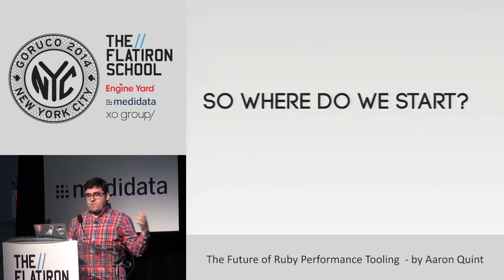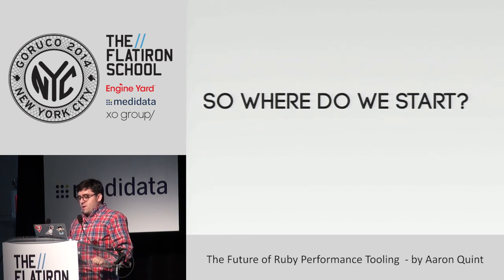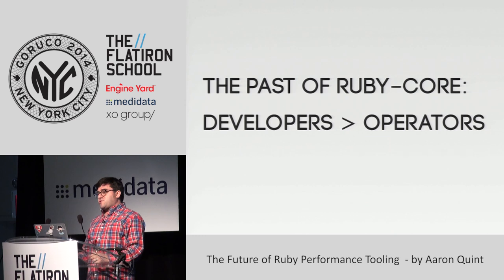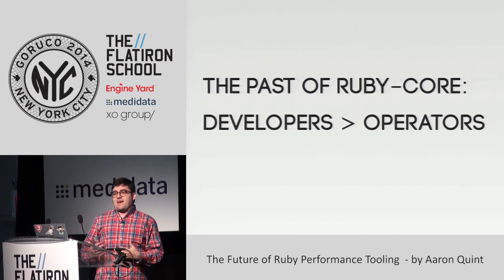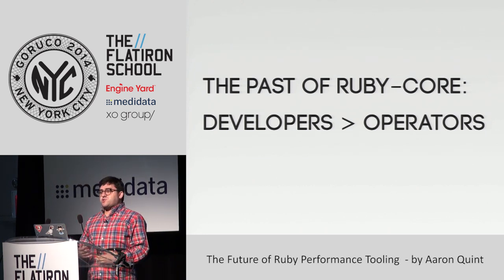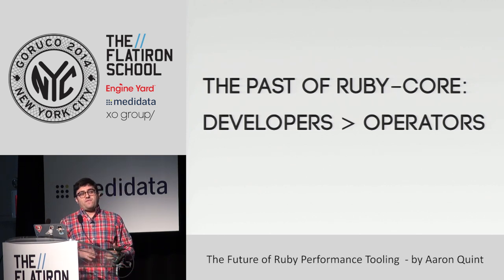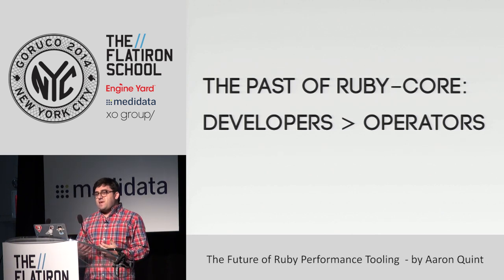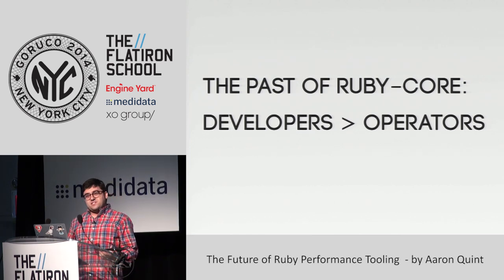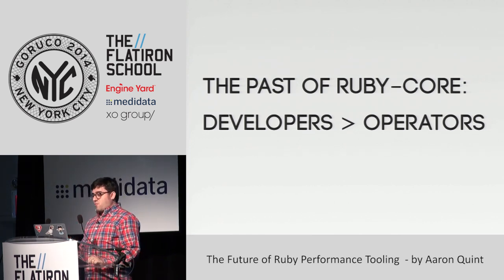So where do we start? In the past, Ruby has kind of suffered here. A lot of time was spent in Ruby core and Rails building features for developers, not for operators. Many of us write Ruby applications but also run large Ruby applications and have to worry about how fast those things run. A lot of features in Rails and Ruby 2.1 improve the speed we can develop new things, but not necessarily the speed of the final application.